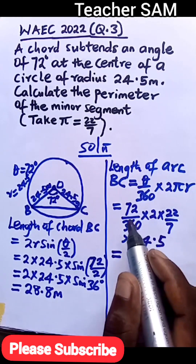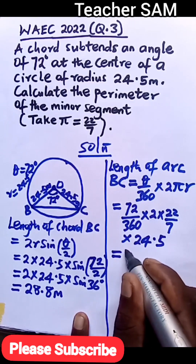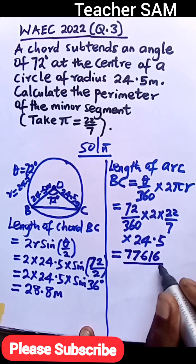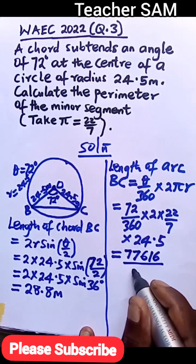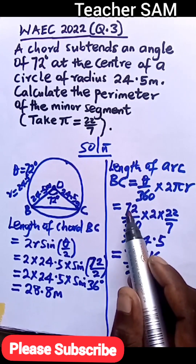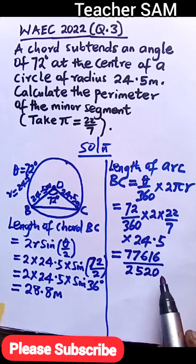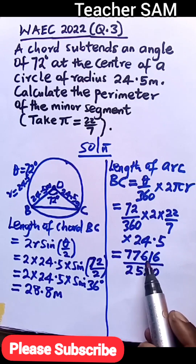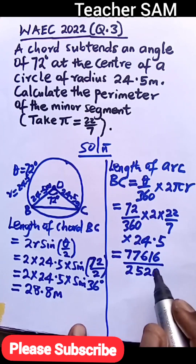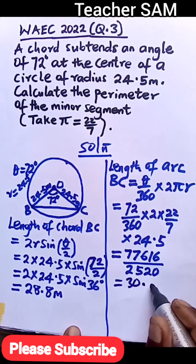When you multiply 72 times 2 times 22 times 24.5, you get 77,616. Divide by 360 times 7, which is 2,520. So 77,616 divided by 2,520 gives us 30.8 meters. That is the length of arc BC.